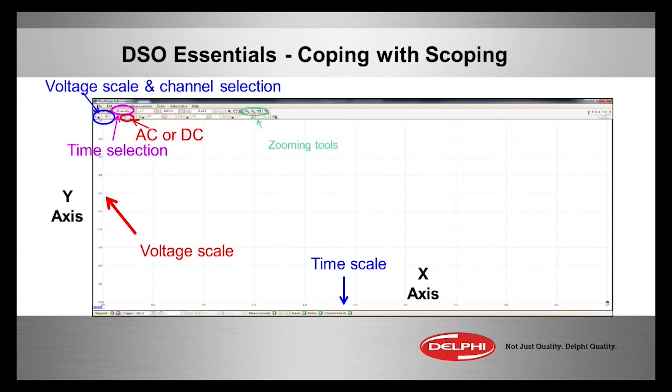You can also blow the pattern up. Just like if you're graphing your scanner PIDs, looking at data on a road test, doing a recording or snapshot of data, and then you stop it — if you're graphing you can blow the graph up. Same thing with the scope. That's the neat thing about a digital storage oscilloscope, the DSO.